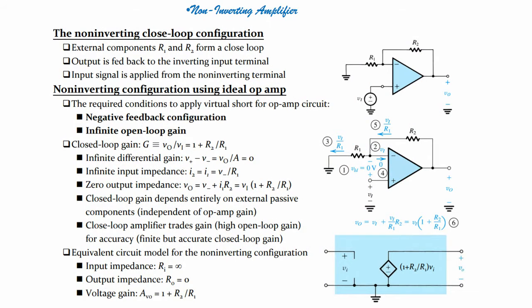Let us come back on the screen and look at the circuit. The input voltage is applied to the non-inverting terminal of the operational amplifier. We still have feedback resistors R1 and R2, and the inverting terminal is grounded while the non-inverting terminal receives the signal.